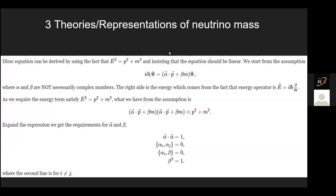All of it is born out of the Dirac equation, which I think was covered on the first day. So it can be derived in this way. You use the energy as momentum squared plus mass squared, energy squared. Here you solve it using natural units, so you have C, which is set to one.